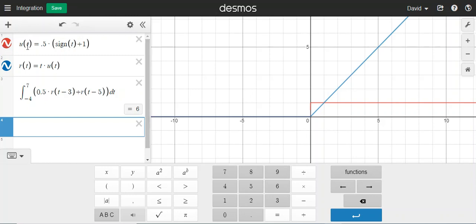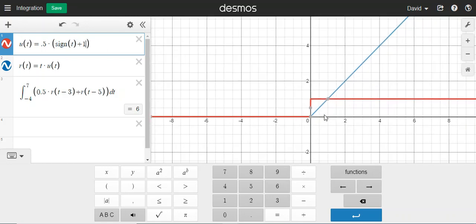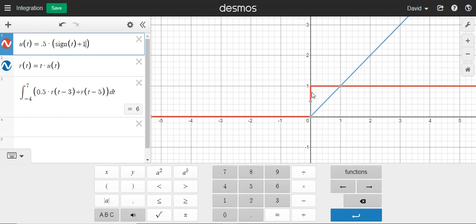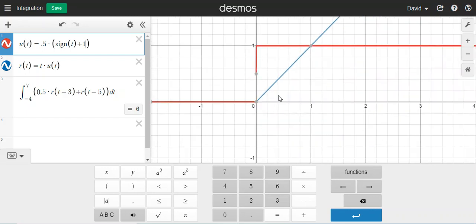So the first thing I've done is I've defined a function called u of t, the unit step function, which is 0.5 times sine. And sine gives you minus 1 for time less than 0 and plus 1 for time greater than 0. And so I add a 1 and then scale it and then you can see at time 0 I go up. Now because it's discontinuous, Desmos won't show you everything.